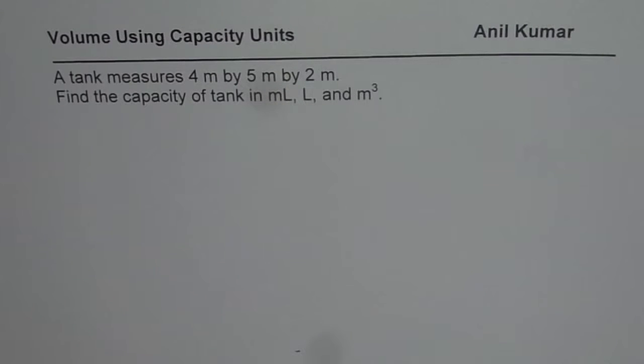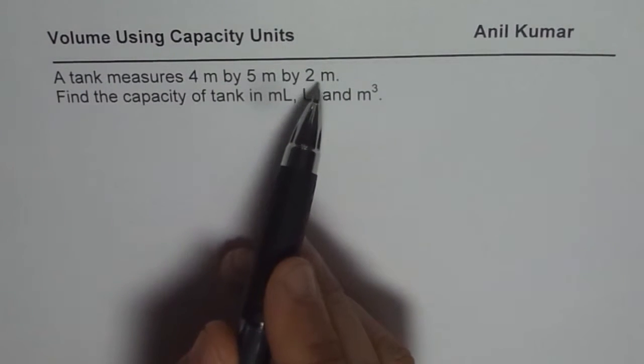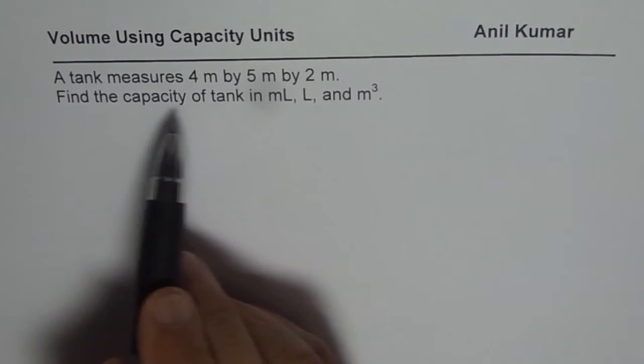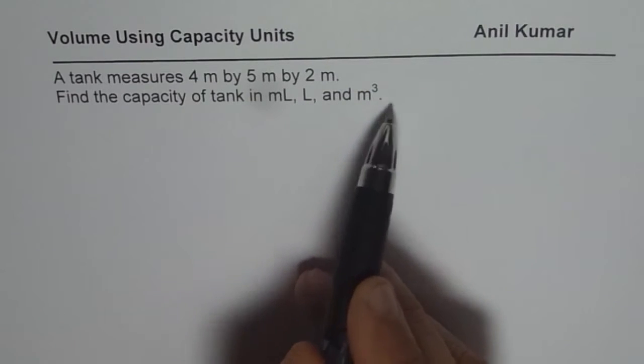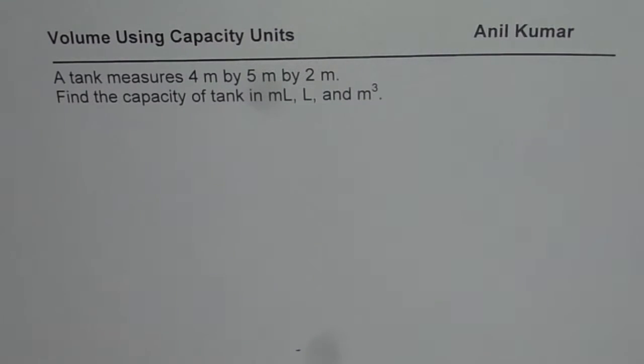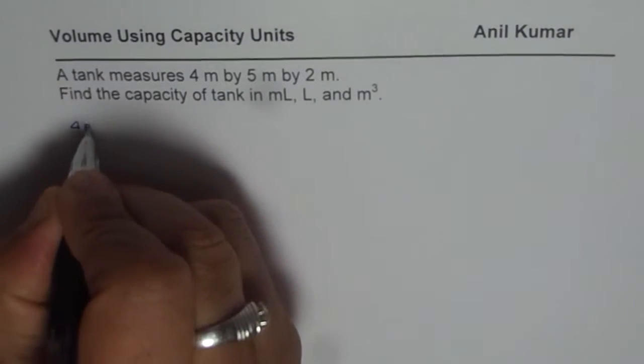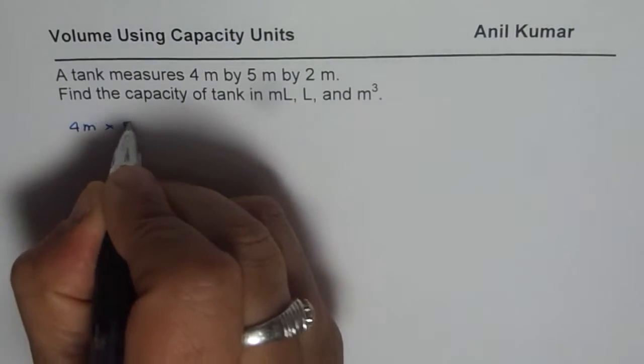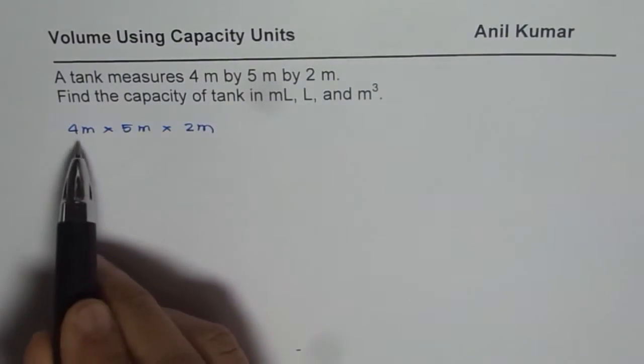Now the question here is, the tank measures 4 meters by 5 meters by 2 meters. Find capacity of tank in milliliters, liters and meter cube. We will find out the capacity of this tank which is 4 meter by 5 meter by 2 meters. That really means length, width and height.